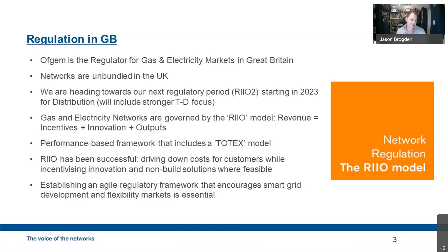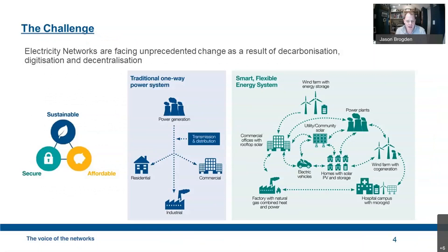The RIIO model gives us incentives to innovate and introduce non-build solutions, which is a lot of what we've been doing over the journey of open networks. That agile regulatory framework helps all of the licensees in the UK. The challenge that's faced us in the UK is very familiar to probably everybody — the movement from a traditional one-way power system from generation, transmission, distribution, and consumption, to a much more flexible, smarter energy system with multilateral flows between numerous sources of generation, storage, and consumption.